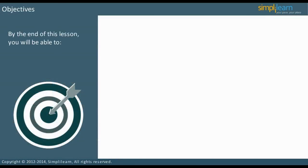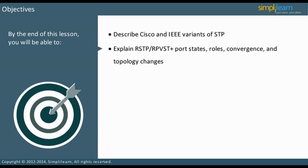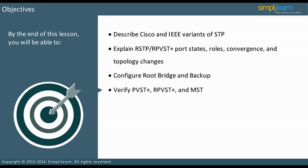By the end of this lesson, you will be able to describe Cisco and IEEE variants of STP, explain RSTP and RPVST Plus port states, roles, convergence and topology changes, configure root bridge and backup, verify PVST Plus, RPVST Plus and MST, and describe how to prevent STP problems. Let us start our discussion of different types of spanning tree.